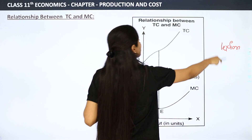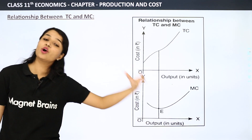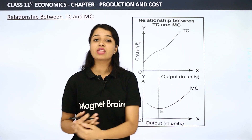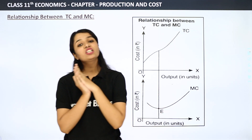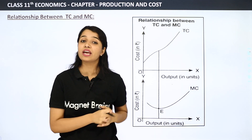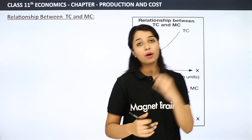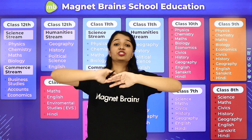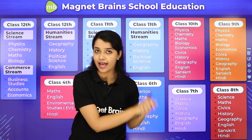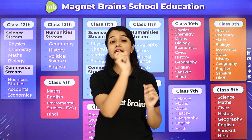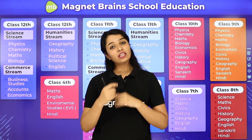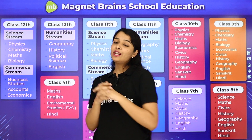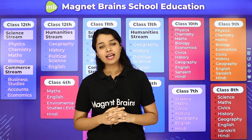So that's our relationship between TC and MC — just 2 to 4 key points. It is very simple: when MC will decrease, when it is at minimum, when it will increase. I hope that is clear. We have now seen all the relationships between different costs. In the next video, we will do some practicals related to costs. You will get the link in the description. Thank you, bye.